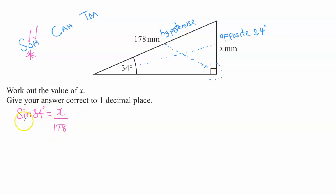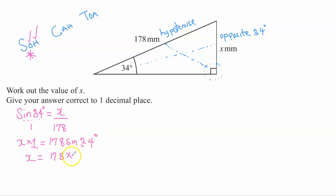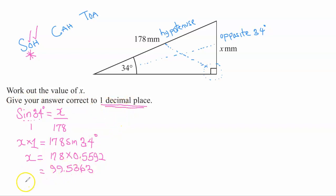Cross-multiplying gives X equals 178 times sine 34 degrees. Sine 34 degrees is 0.5592. Multiplying 178 by 0.5592 produces 99.5363. We are asked to give our answer correct to one decimal place, so we look at the digit after the 5, which is less than 5, so we round down. X equals 99.5 millimeters.